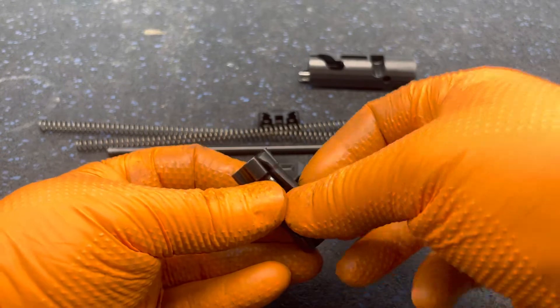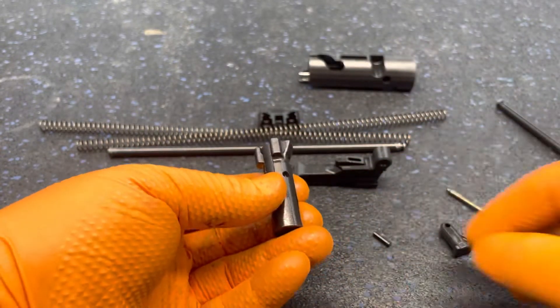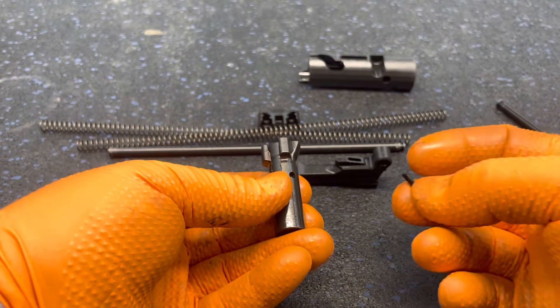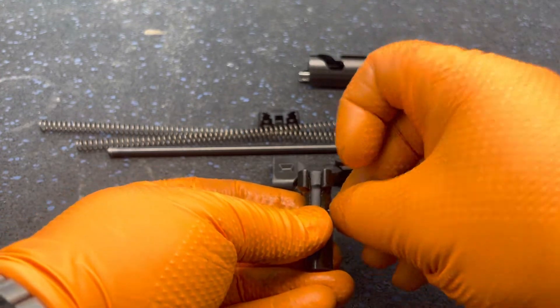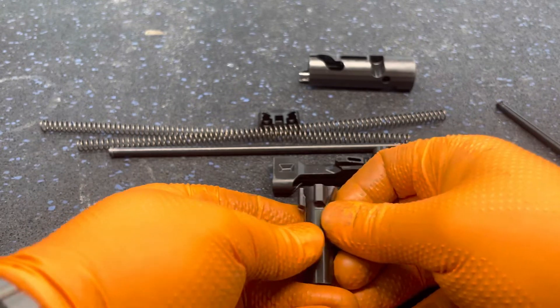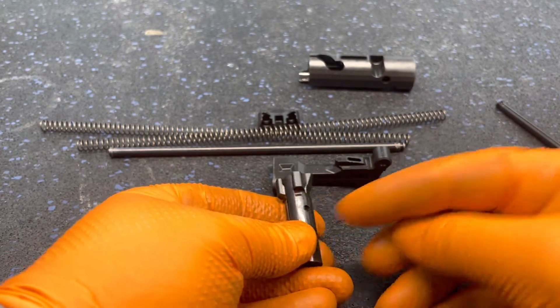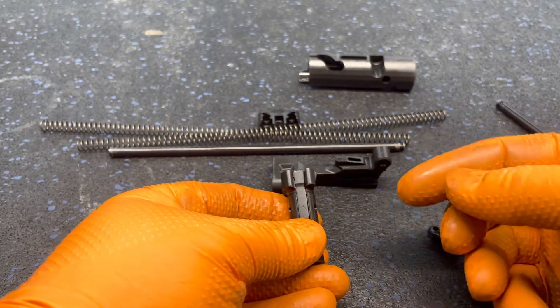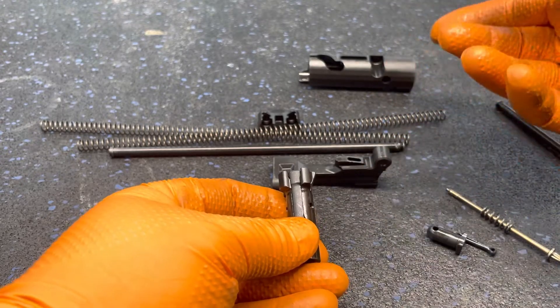To reassemble this, simply put the extractor back in, put downward pressure, make sure you orient the pin correctly, push it in. You want to make sure that that pin head is flush in there, otherwise you'll create drag with the carrier.